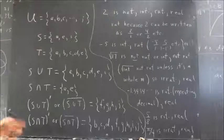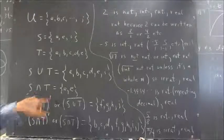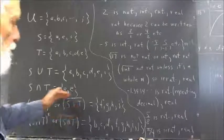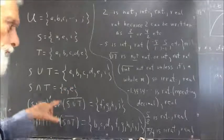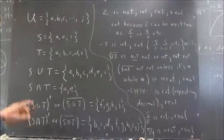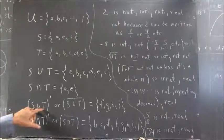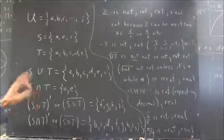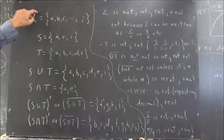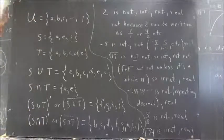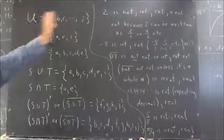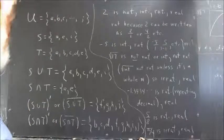Now the complement, S union T prime—the apostrophe is read as a prime—or S union T with a bar over it, both mean the same thing, mean the complement. That means every element of the universal set that is not in this set. So the elements of this set will not be included, but everything else in the universe will be included.